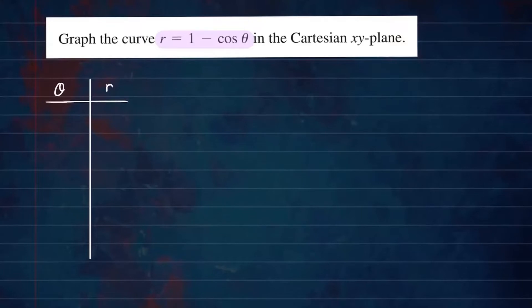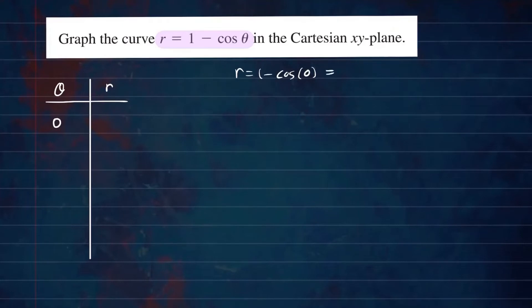Let's start with theta = 0. So if theta is 0, you have r = 1 − cos(0). Cosine of 0 is 1, so this is 1 − 1 = 0. So when theta is 0, the radius is also 0.